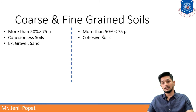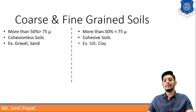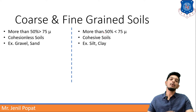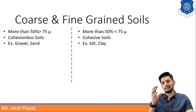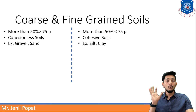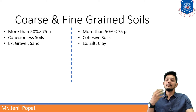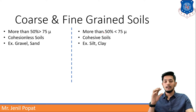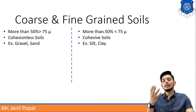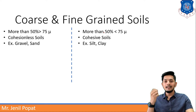If we talk about examples of coarse-grained soils, it will be gravel and sand. You see gravels on the riverside are having cohesion-less bonding. Same way if you see cohesive soil like silt and clay, they are fine-grained soils.